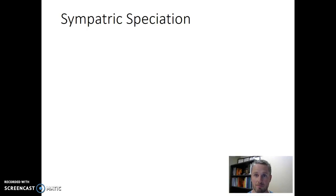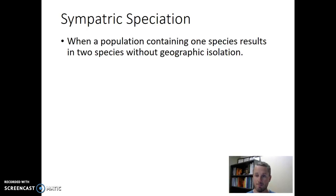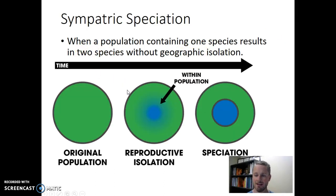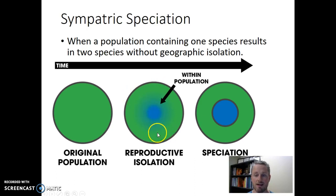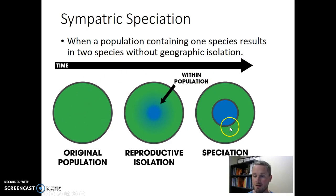So how about sympatric speciation? Sympatric speciation is when we have a population containing one species, and we keep that population all together in one place. Without geographic isolation, we still get two species. The whole population stays in one place with no geographic barrier — in theory, any organism could interact with any other. But somehow we generate a new species within this population through reproductive isolation, starting with one species and ending with two. It's a sympatric speciation event because they were all in the same place at the same time.